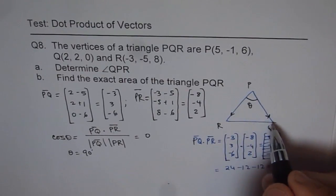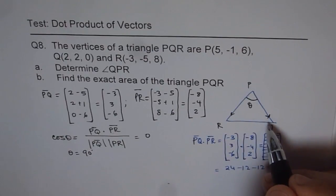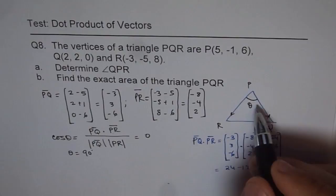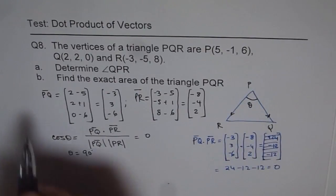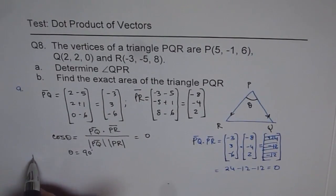Now if theta is ninety degrees that means this is a right triangle. Since this is a right triangle, then the area will be half base into height, so product of these two sides into half. That's part A.